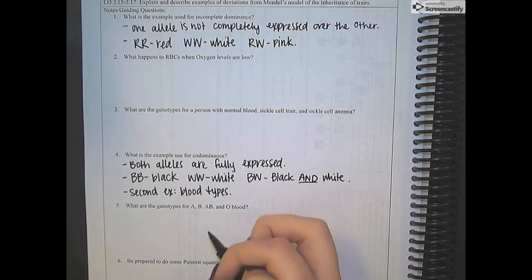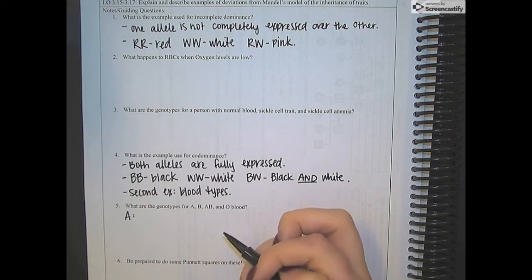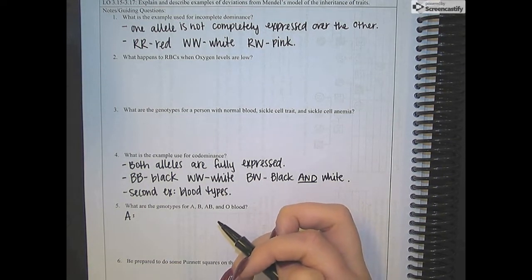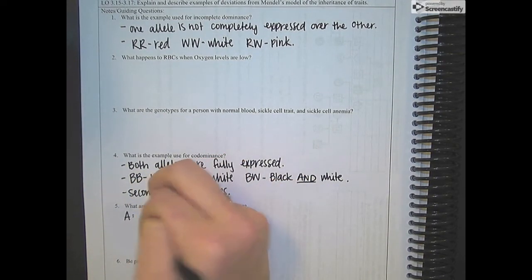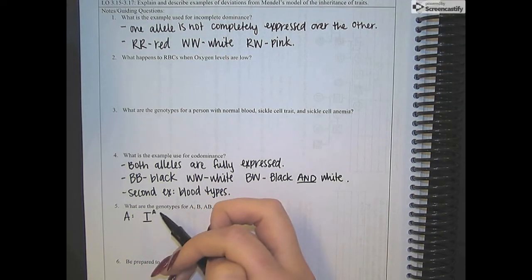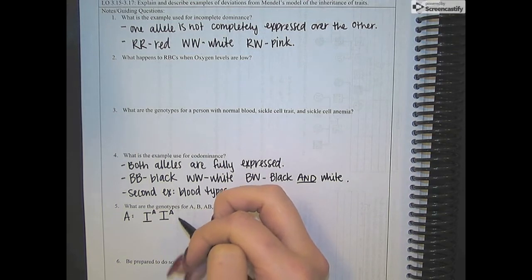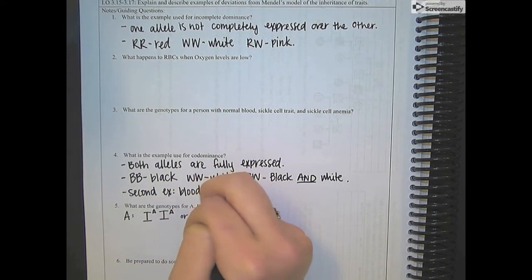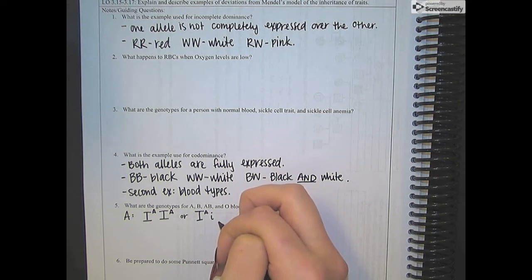So the genotypes that are possible for A blood. So first, let me explain what A blood is. A blood is going to be blood that has the A antigen on the surface of it. The fancy science-y word for those antigens that we're talking about is isoagglutinogen. They are going to have at least one A antigen in their genotype. So they could have two of these isoagglutinogen As, or they could have one isoagglutinogen A and one of the recessive no antigen.